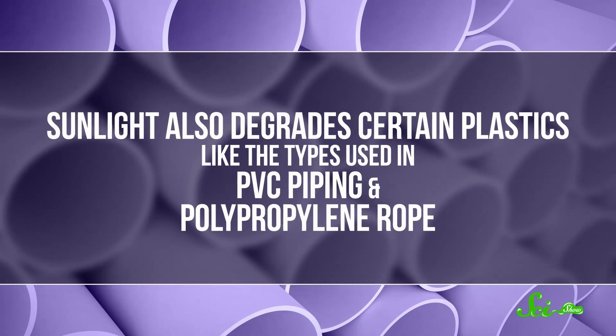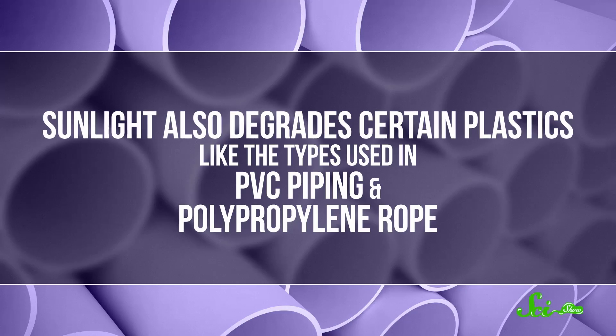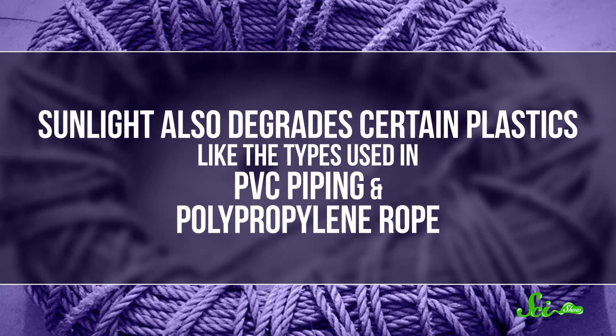But sunlight messing with chemical bonds does more than just fade colors. It also degrades certain kinds of plastic, like the type used in PVC piping and polypropylene rope. After spending enough time in the sun, pipes start breaking, and ropes start snapping. And if there's one thing you don't want the rope to do, it's snap.